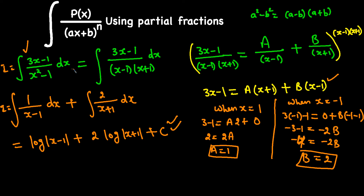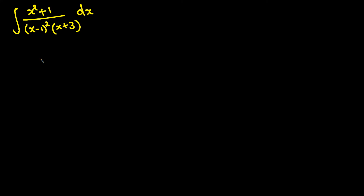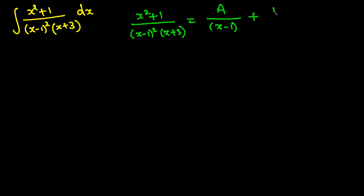Let's do another example where the denominator has a repeated linear factor. The next example is (x squared plus 1) over (x minus 1)²(x plus 3). This factor x minus 1 appears twice, so we need to handle it differently. We write the partial fractions as A over (x minus 1) plus B over (x minus 1)² plus C over (x plus 3).